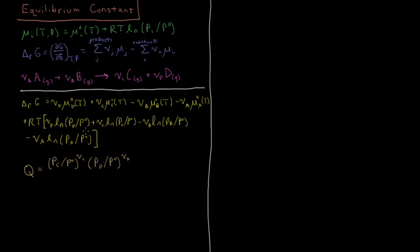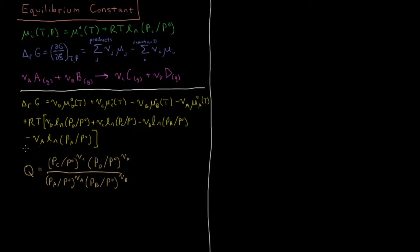Those product terms had positive coefficients. For the negative logarithm terms — since minus ln(x) equals ln(1/x) — the reactant terms go into the denominator. So Q equals (PC/P⁰)^νC · (PD/P⁰)^νD divided by (PA/P⁰)^νA · (PB/P⁰)^νB. Taking the natural log of Q gives us all four of those log terms, so RT·ln(Q) is equivalent to the entire pressure-dependent part of our expression.